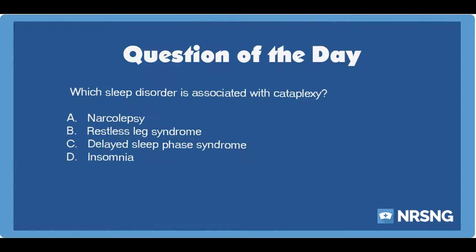Which sleep disorder is associated with cataplexy? A. Narcolepsy. B. Restless Leg Syndrome. C. Delayed Sleep Phase Syndrome. D. Insomnia.